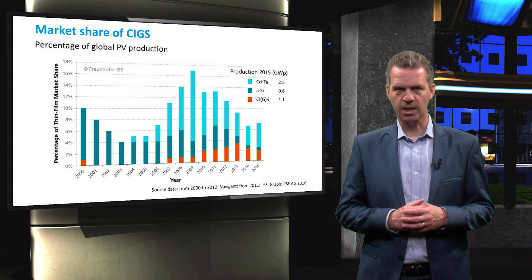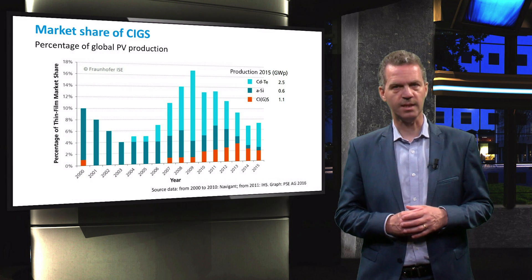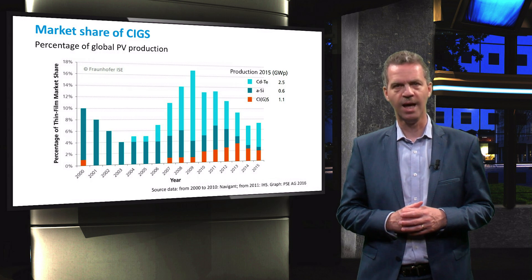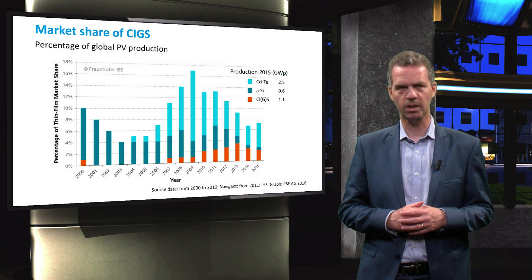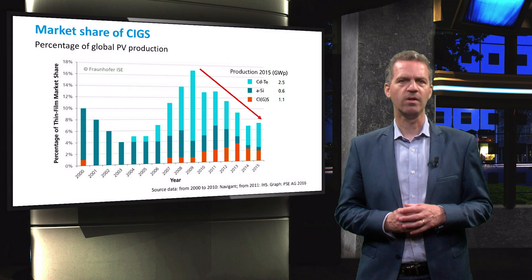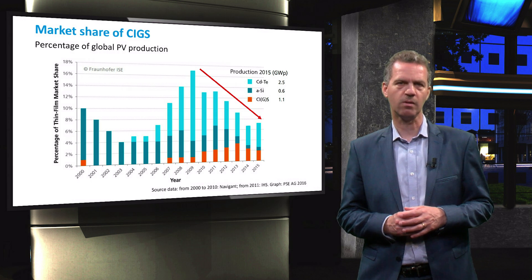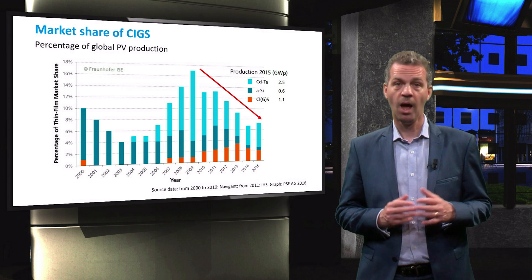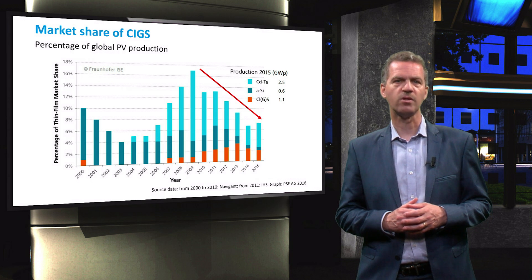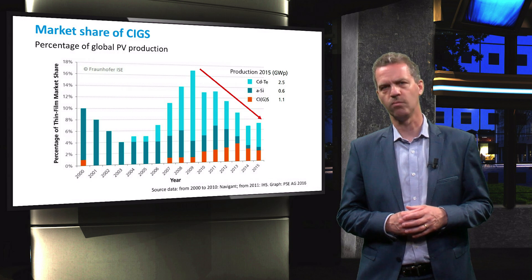Both cadmium telluride and CIGS are thin film solar cell technologies. This graph, published in 2016, shows the market share of these two technologies, as well as thin film amorphous silicon as a percentage of the global PV production per year. One can see that in the last couple of years, the share of thin film technologies has dropped, which is primarily caused by a vast increase in production capacity of the crystalline silicon technology. Nevertheless, there is still some potential for CIGS and cadmium telluride that takes advantage of thin film technology benefits such as versatile product integration and lightweight applications.